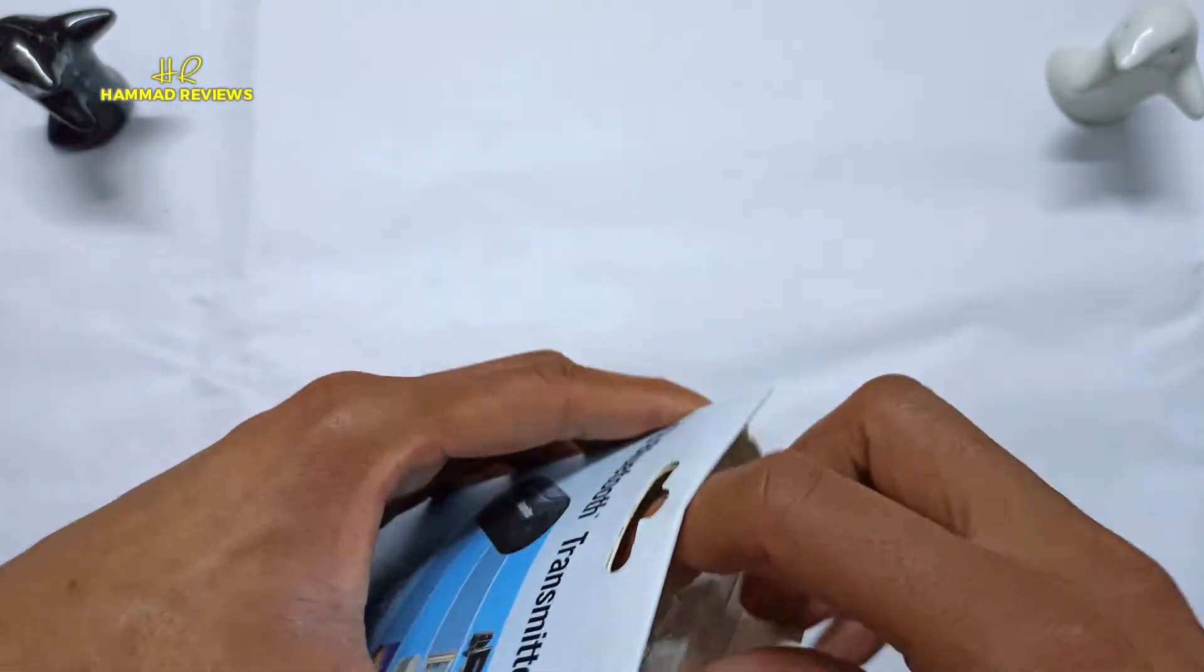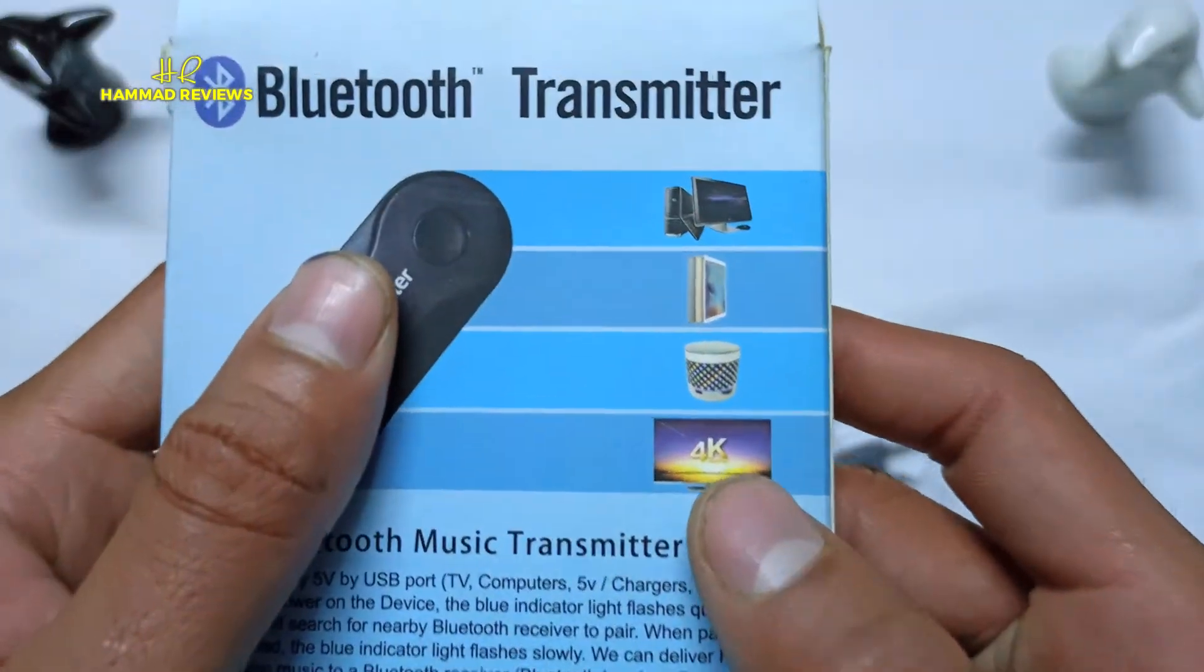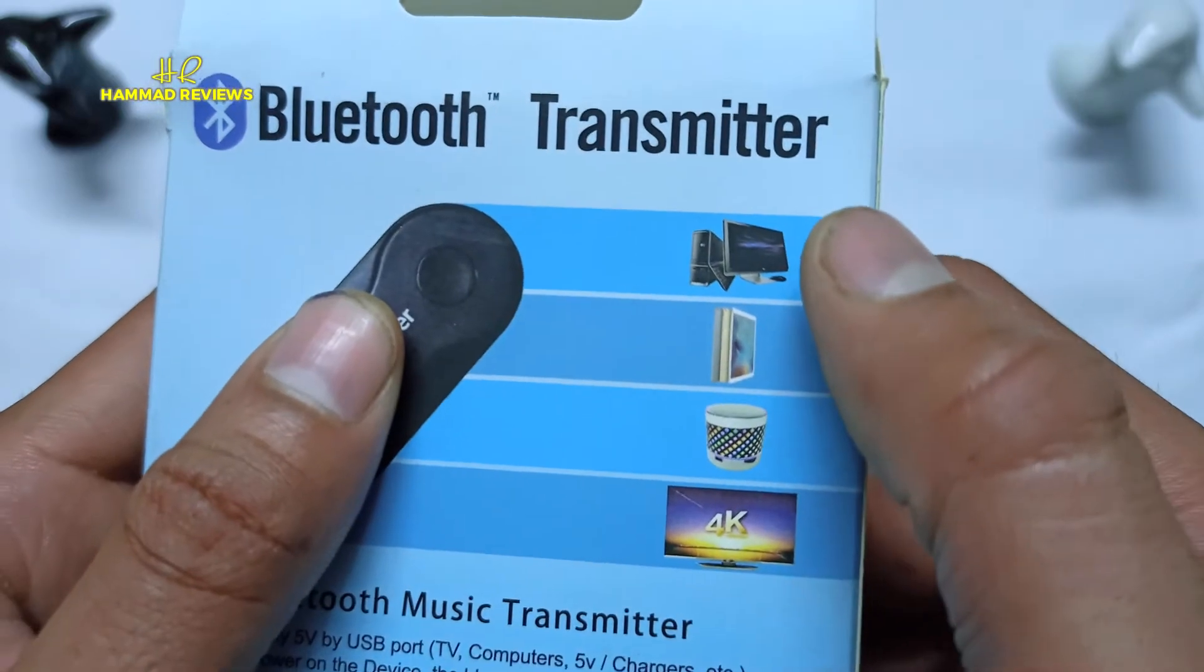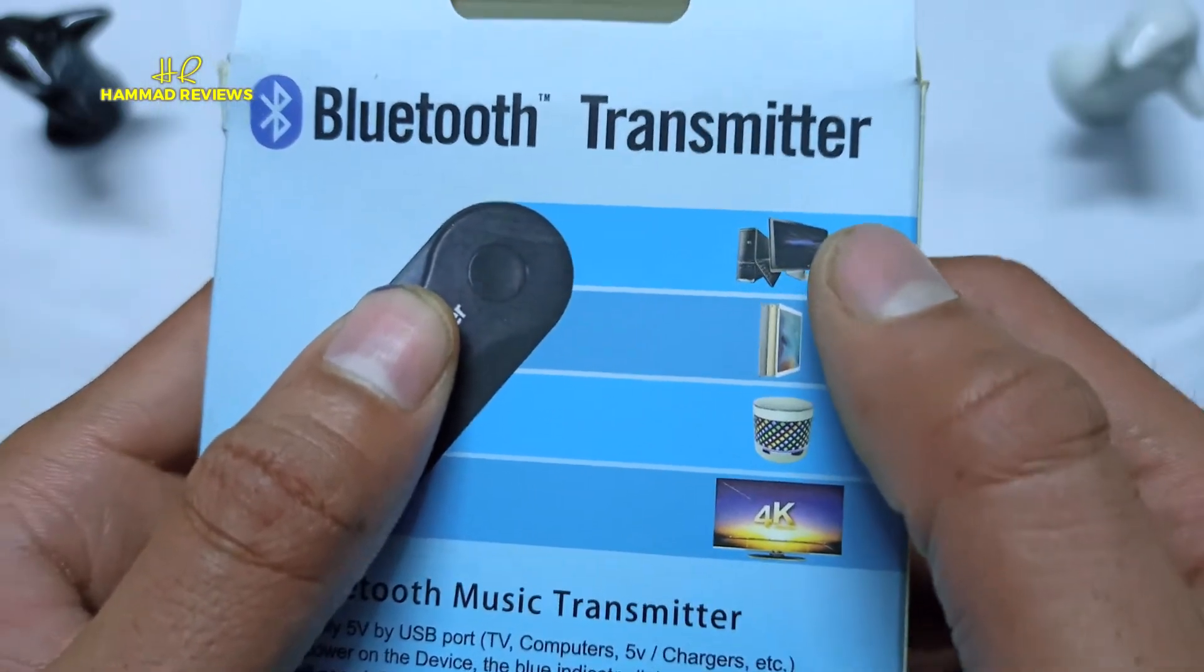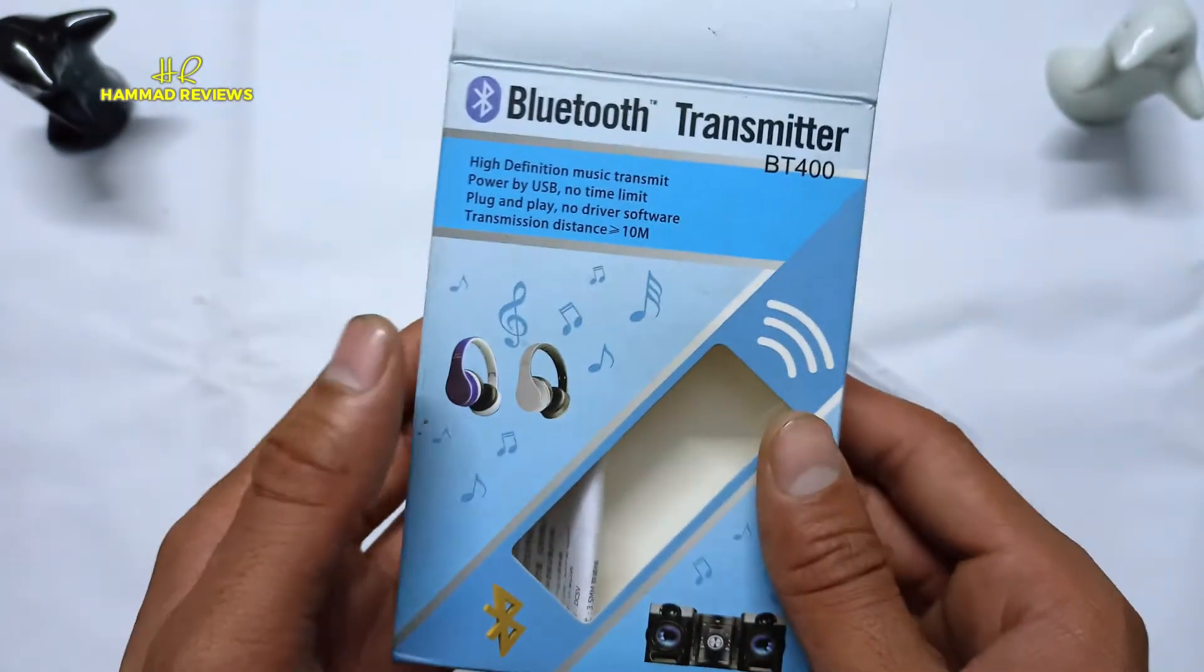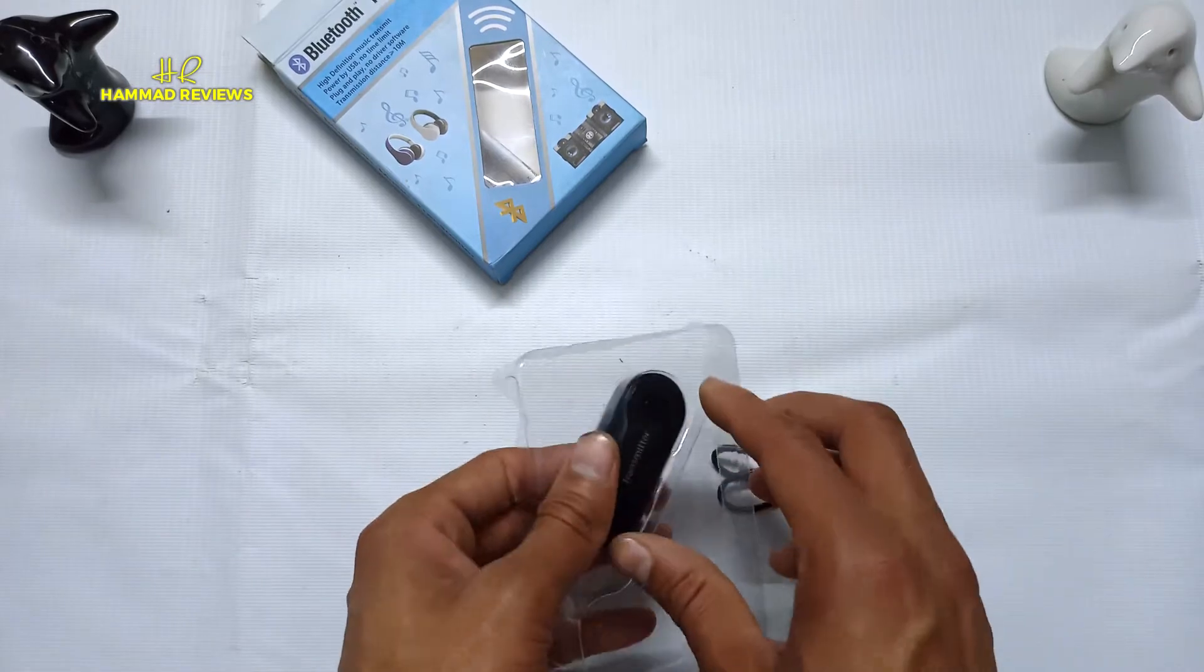Transmission distance is 10M. This is the main box. I am going to unbox this. It will connect to speakers, tablets, and PC can also connect. If you need to connect the car you can also connect, and mobile to turn on and play something with mobile.